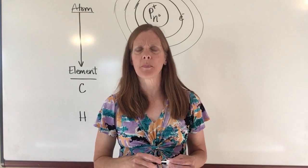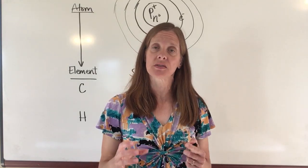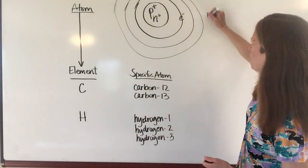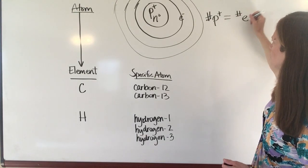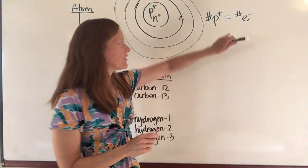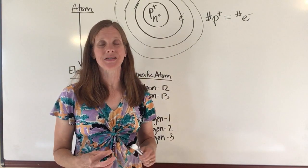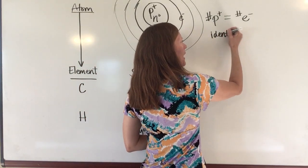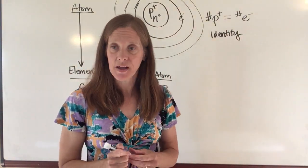The important thing about the number of protons and the number of electrons is that they're always going to be equal to each other. But this number of protons is also going to determine the identity of the atom. So for example, all atoms of carbon have six protons and six electrons.